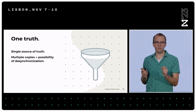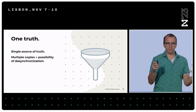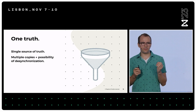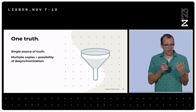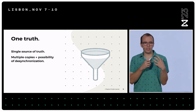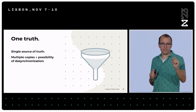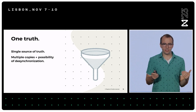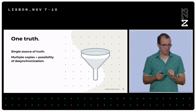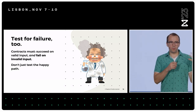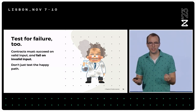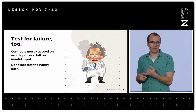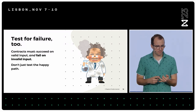Next, we have one truth — have one source of truth for the data in your smart contract. If you have multiple different places storing the same data, that can cause synchronicity issues. With one source of truth, you can tightly control how that data changes — there's only one way to access it, and you have to go through all the different checks and verifications. Finally, test for failure as well. We want the happy path to work, but we also want to make sure our smart contract fails where it's supposed to fail. Test for failure too.